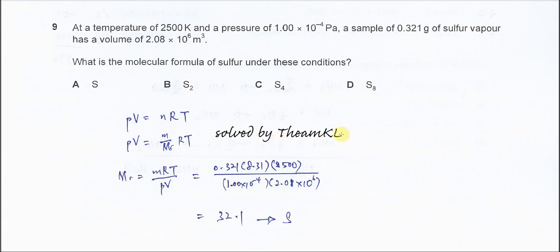Question 9. At a temperature of 2500 Kelvin and a pressure of 1 times 10 to the power of 24 Pascal, a sample of 0.321 gram of sulfur has a volume of 2.08 times 10 to the power of 6 meter cube. What is the molecular formula of sulfur under this condition?